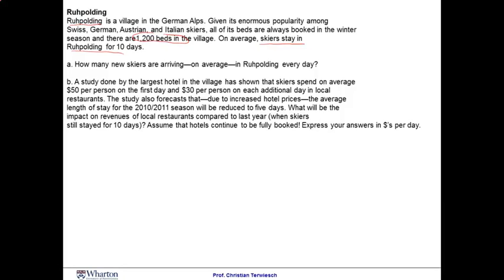How do we figure this out? This is a Little's Law question. We have a situation in which we know how many skiers there are in the village, because we know that all these beds are booked out. And so I know that I have 1,200 skiers. I also know that they are staying on average for 10 days. Little's Law now tells me that if I solve this equation here for the flow rate R, that there are going to be 120 tourists or skiers per day flowing through the village. And that means that 120 are arriving.